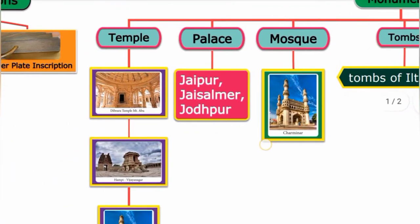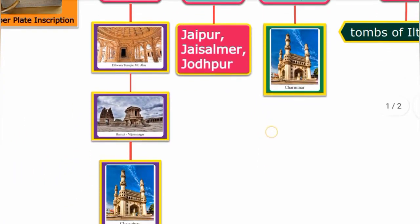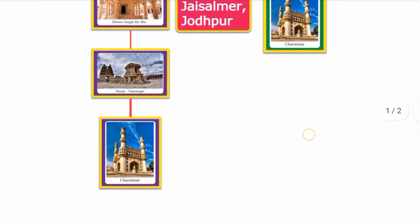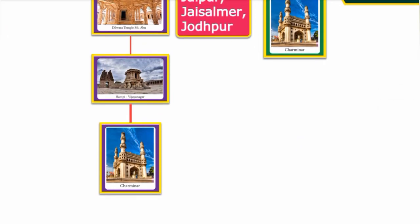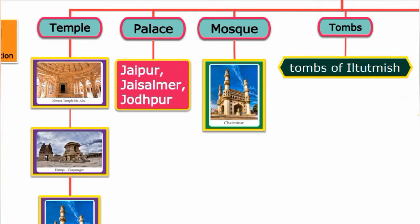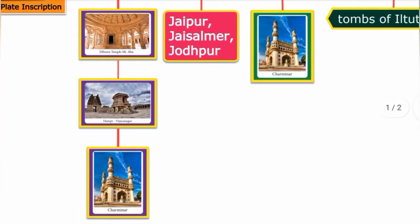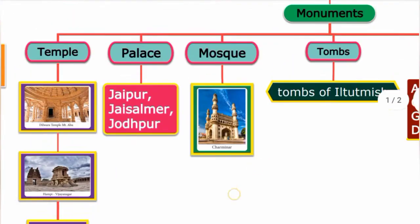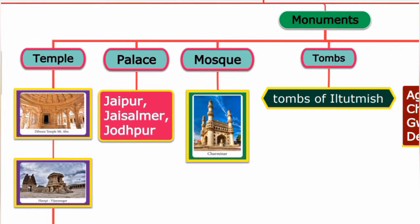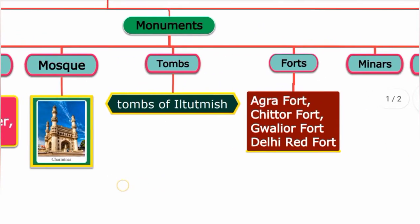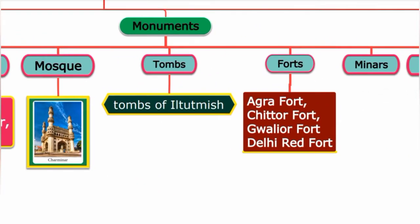Examples of temples include Hampi and Vijayanagar temples. For palaces, we have Jaipur Palace, Jaisalmer, and Jodhpur palaces. For mosques, there is Charminar. For tombs, there is the Tomb of Iltutmish. Forts include Agra Fort, Chittor Fort, Gwalior Fort, and Delhi Red Fort.